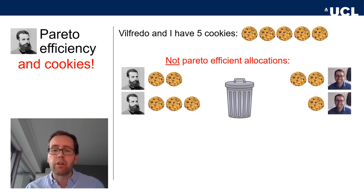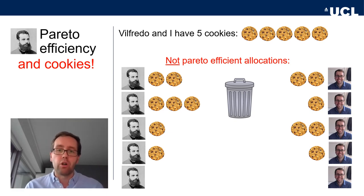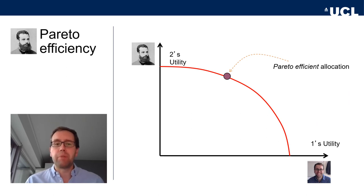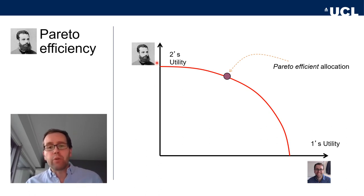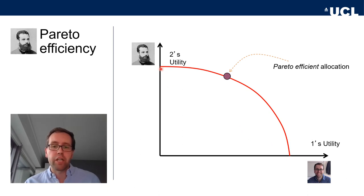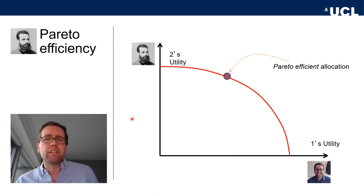So what are not Pareto efficient allocations? Wilfredo getting three and me getting one, or me getting two and Wilfredo one, or both getting no cookies and all cookies thrown away — these are not Pareto efficient. Now the graph displays Wilfredo's and my utility derived from cookies. We've made the transfer from cookies to utility, assuming both of us like cookies roughly in the same way. If we just plotted the allocation of cookies, we'd get a straight line — Wilfredo gets five and Roland gets zero, or we both get two and a half.